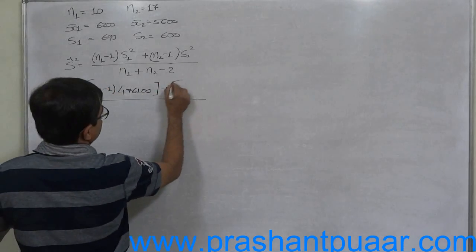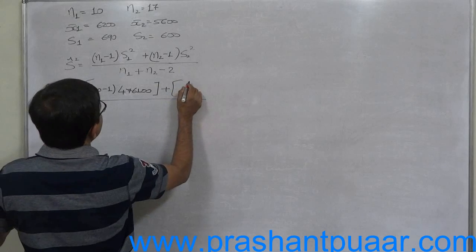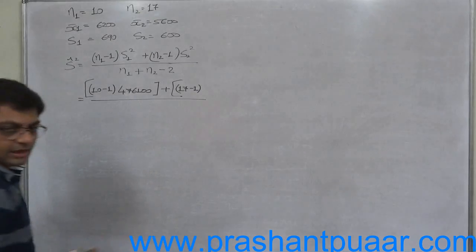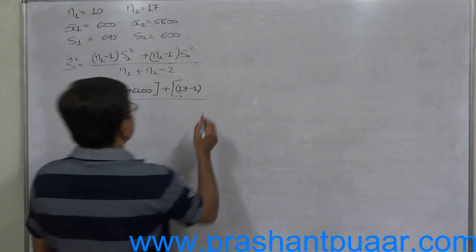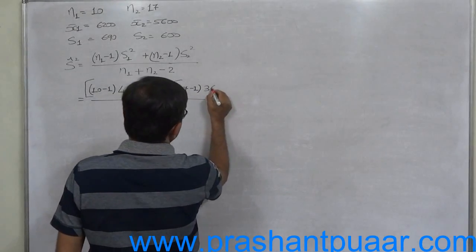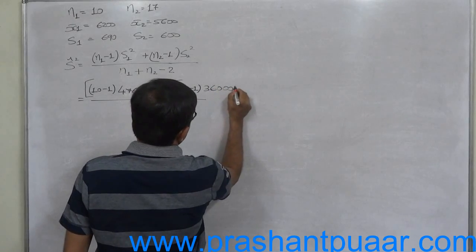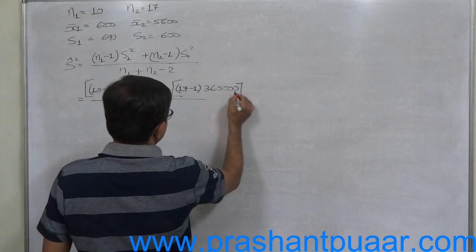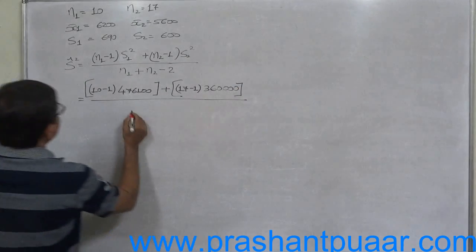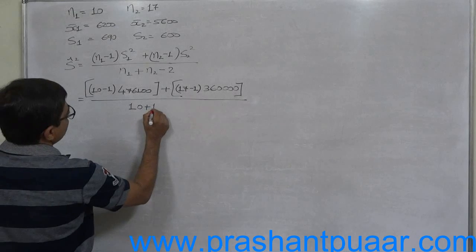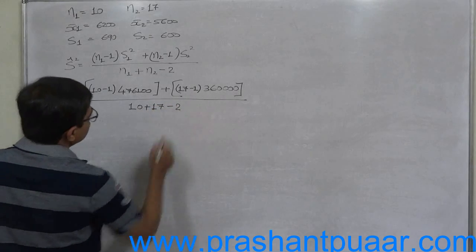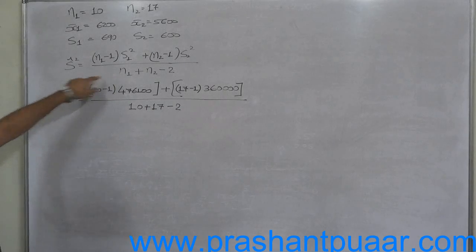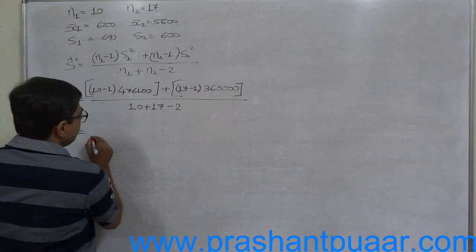Plus n2 minus 1, that means 17 minus 1, into S2 square of 600, what is S2 square? 600 square is 360,000, upon n1 means 10 plus n2 means 17 minus 2. This is degrees of freedom for this kind of test. Now simplify it.